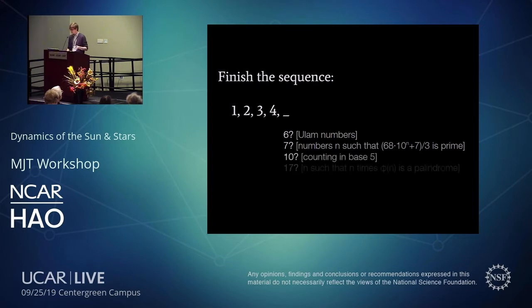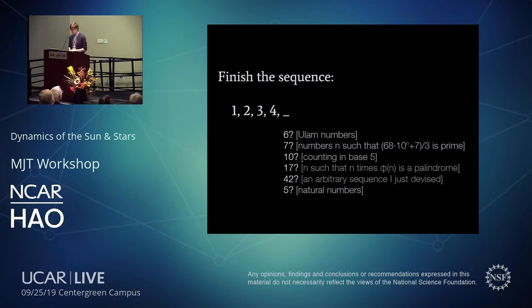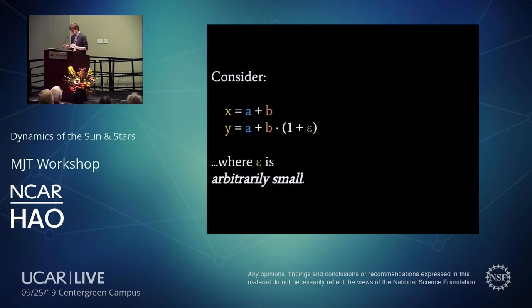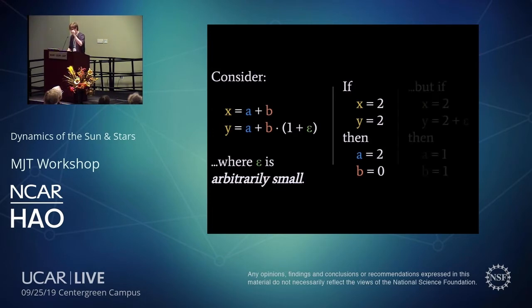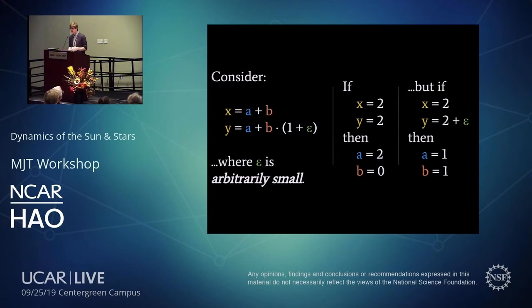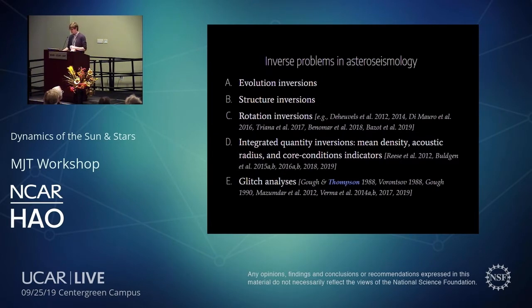Here's another inverse problem: finish the sequence 1, 2, 3, 4 — it could be 6 for Ulam numbers, 7 for some sequence of primes, 10 if counting in base ten or base five. Now consider a coupled system: x = a + b, y = a + b times some small correction. The forward problem is trivial, but the inverse problem is ill-posed: a tiny change to y leads to a completely different solution discontinuously. That's the problem we're faced with.